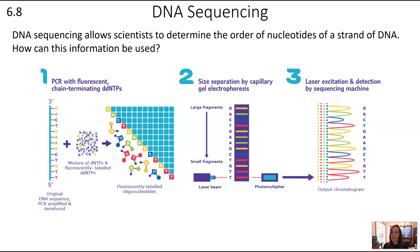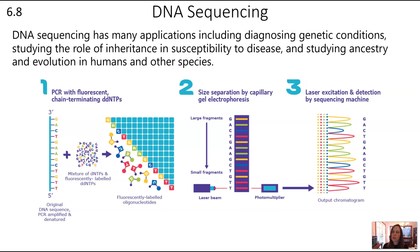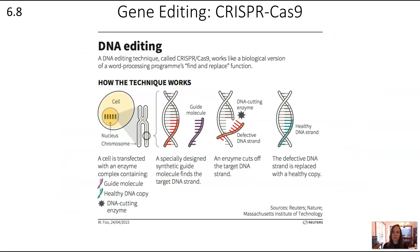Another form of biotechnology is DNA sequencing, which allows scientists to determine the order of nucleotides in a strand of DNA. This has become so efficient that scientists can determine long sequences of DNA relatively cheaply and quickly. DNA sequence information has many applications: diagnosing genetic conditions, studying the role of inheritance in susceptibility to disease, studying ancestry and evolution in humans and other species, and much more. Knowing the nucleotide sequence is really important in understanding genes and their function.